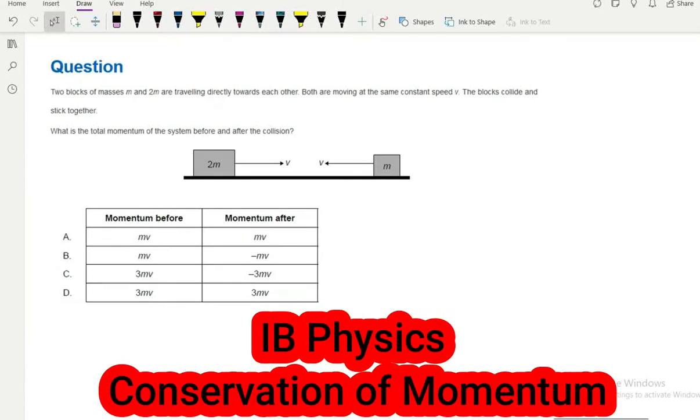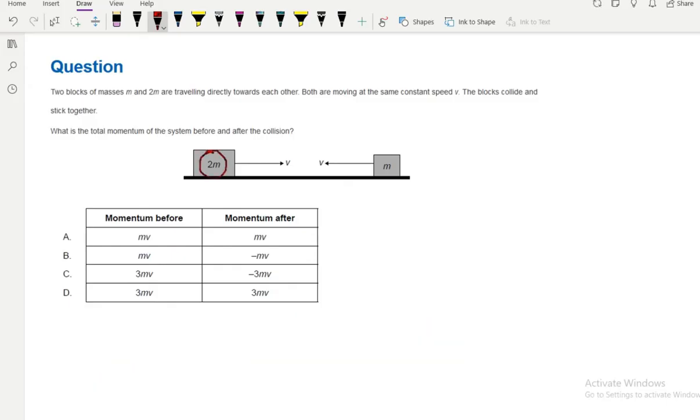Hello everyone, this is an IB physics question about mechanics. Two blocks of masses M and 2M are traveling directly towards each other. The first block has a mass of 2M and speed V.